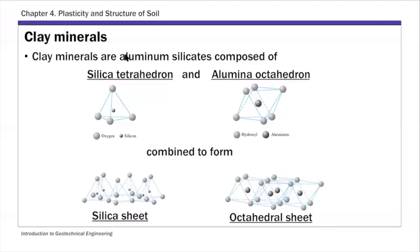In terms of minerals, as I mentioned, these are more fundamental, important from a fundamental perspective. Clay minerals are aluminum silica, and composed of silica tetrahedron and alumina octahedron. And they're combined to form silica and octahedral sheets. So these are common types of clay. This is at an even lower level, how clay minerals are formed.